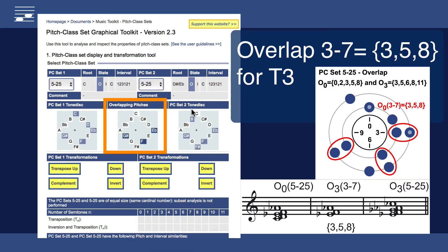Likewise, shifting the set by three semitones leads to the maximum overlap of three pitches: E-flat, F, and A-flat.